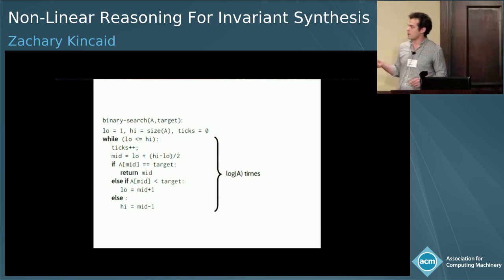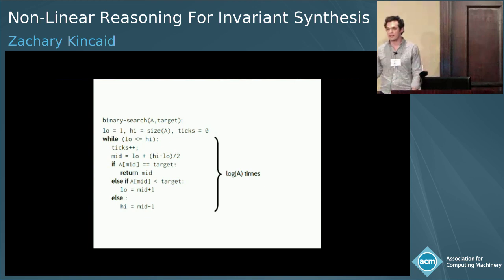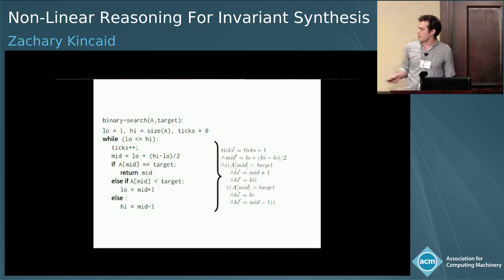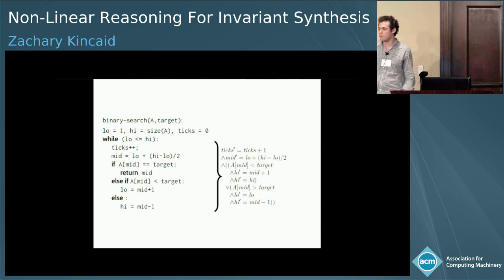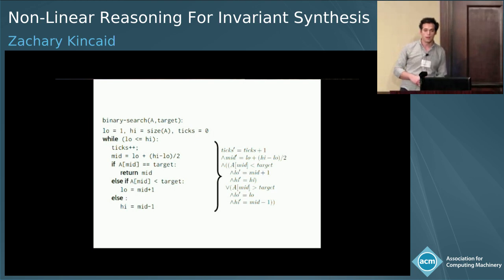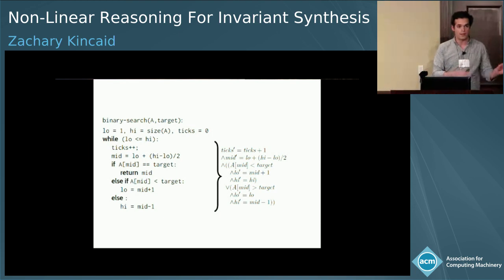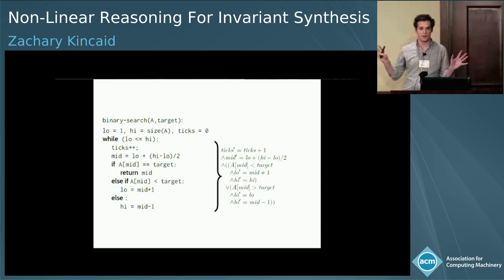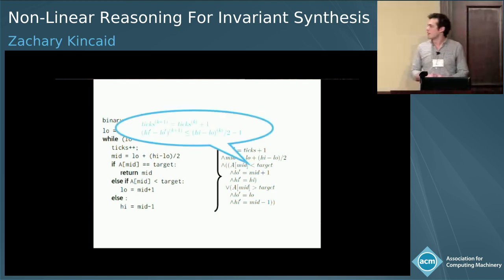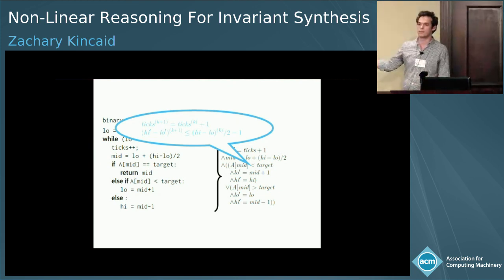For example, here's an implementation of binary search. Something I might want to prove is that it executes in logarithmic time. The first step toward doing this is to encode the body of the loop as a transition formula. This is really just a straightforward translation from the syntax of the programming language into logic — there's nothing fancy going on here. The trick is: how do we extract a system of recurrences that approximates this transition formula?